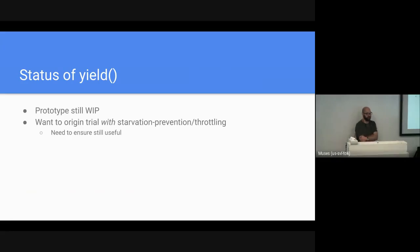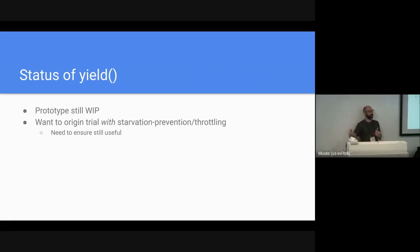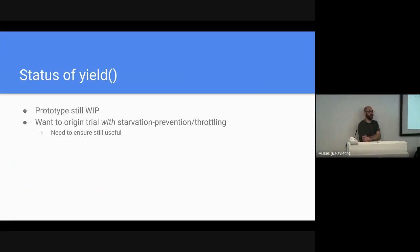We're not exactly sure how we're going to implement this yet. The prototype for yield is still a work in progress — Nate's working on a patch. We think it's important to start with an option that does the throttling right up front. We want to origin trial this API to see how it works, but we don't want to give semantics where you can starve and people expect nothing else can come in between the continuation. The worst case is if we add throttling later — it's probably going to be spec-breaking, and it might disincentivize people from yielding at all, which is also bad. So we want to get this correct up front.